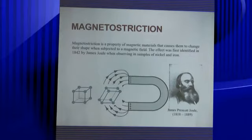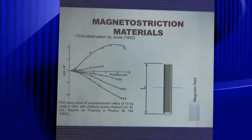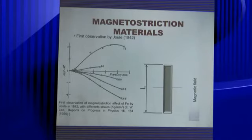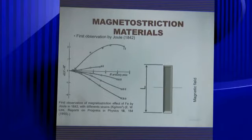Magnetostriction was discovered by Joule in 1842, when he observed the change of size of nickel and iron samples. When a field is applied, the crystal changes size and increases in length in the direction of the applied field. All materials in principle have magnetostrictive properties, but especially iron, nickel, and their alloys show important effects.